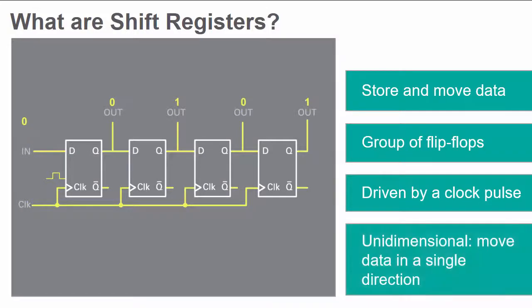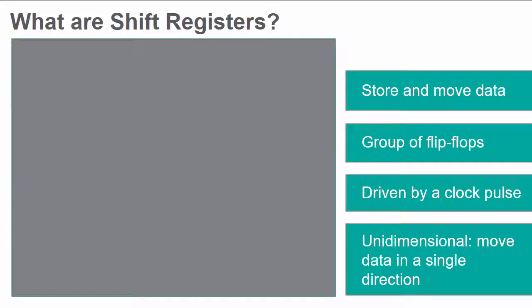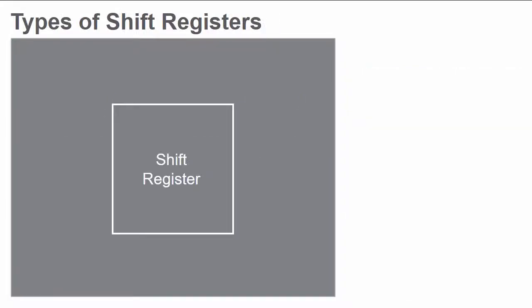A shift register that moves data in one direction is known as a unidimensional shift register. There are four types of shift registers.